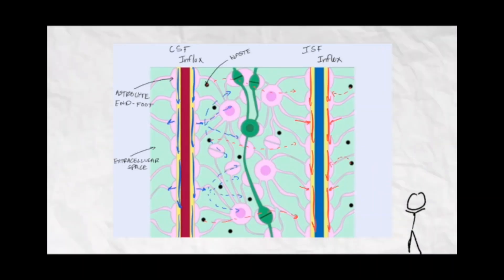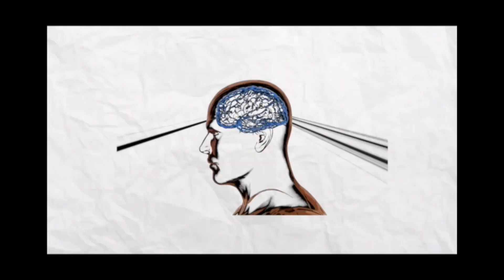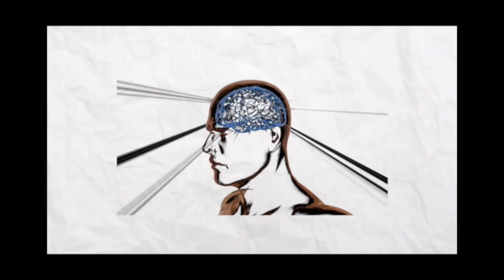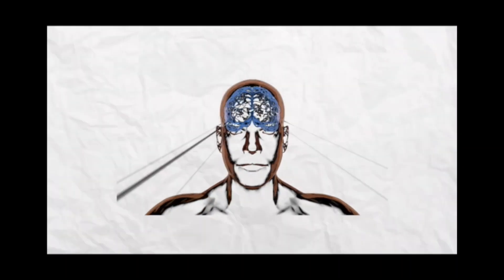But you mentioned sleep. Where does that play a part in the glymphatic system? In recent research, during sleep, the brain's extracellular space expands, which results in decreased resistance to CSF and ISF flow, allowing for smoother clearance of the brain's metabolic waste.